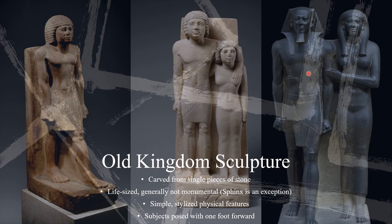Ancient Egyptians also made sculptures during the Old Kingdom. Their sculptures were fairly simple compared to the sculptures of later periods, usually carved from single pieces of stone rather than being composites. They were generally life-sized and not monumental, although there are exceptions like the Sphinx. The physical features are simple and stylized, fairly static, and don't contain the kind of detail and movement you would see in Greco-Roman sculpture or even Egyptian sculpture of later periods. Subjects are usually posed with one foot forward — a pose iconic to the Old Kingdom.